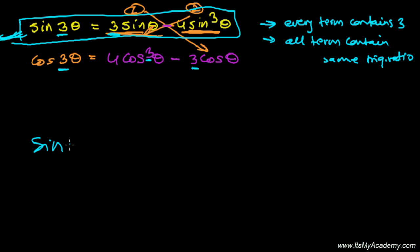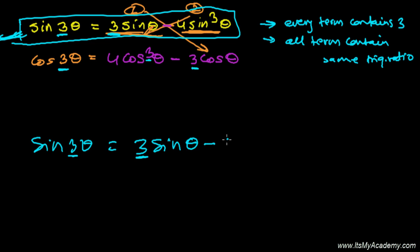One more time: to write sine 3 theta, it starts with 3 — 3 sine theta. In the next term, after 3 comes 4, so it's 4. Each term contains the same trigonometric ratio, so it will be sine. We didn't get 3 in the exponent yet, so cube it — sine cubed. That gives us 3 sine theta minus 4 sine cube theta.